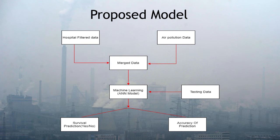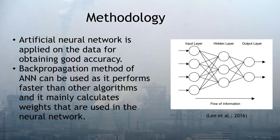Testing data is also applied on that model to check whether it is working on real-time data or not. Further, accuracy of the prediction is increased using the ANN technique. The ANN algorithm consists of three layers: input layer, hidden layer, and output layer. In ANN, information streams from the input layer to the output layer. Each element is given a particular weight, and then the sum of the weights is calculated and sent to the next layer.